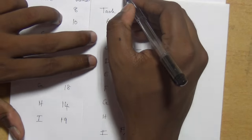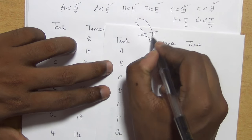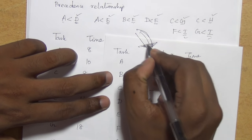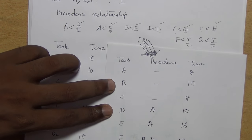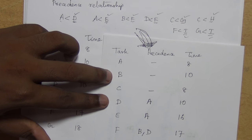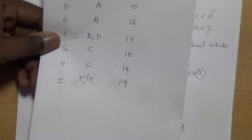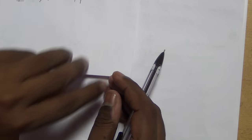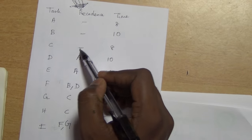So now the given data is converted to this tabular form. Using this data we are going to draw the activity diagram and also we are going to solve this CPM. We need to draw the network diagram for this. A, B, C are the activities that don't have any predecessor so we can directly draw these first.